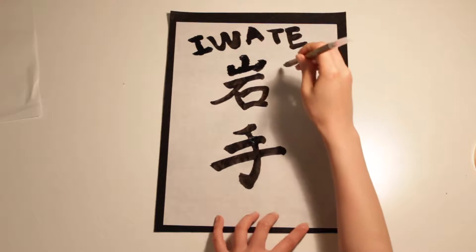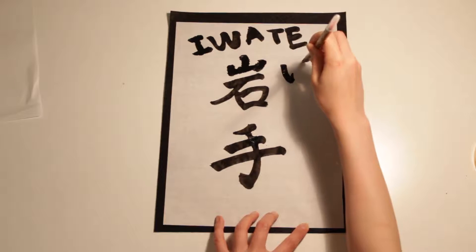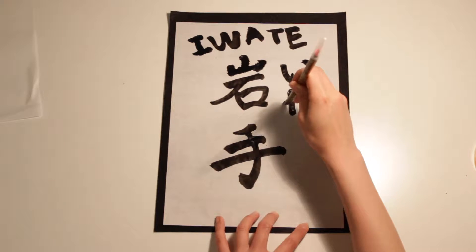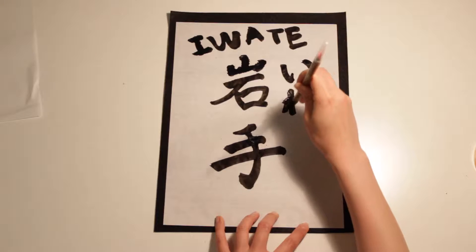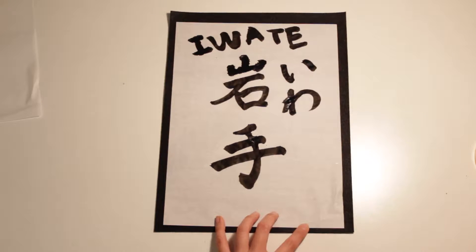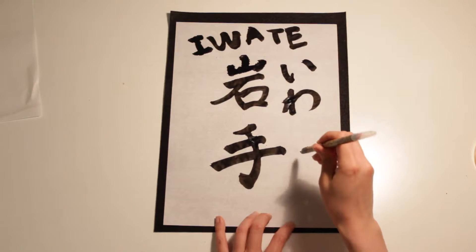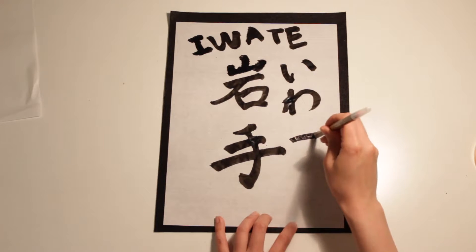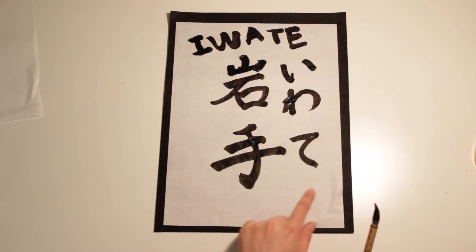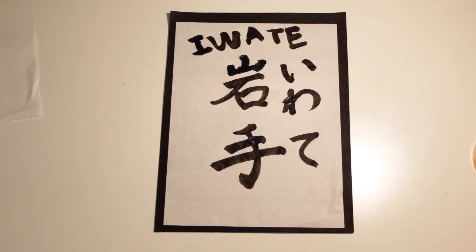So Iwate — Te. How do I write kana? Iwa means rock — sorry, it's rock. Te means hand. It looks similar. That's it. See you guys.